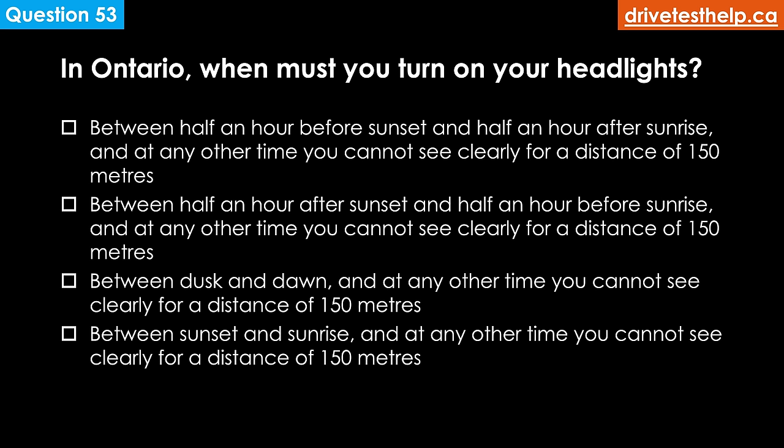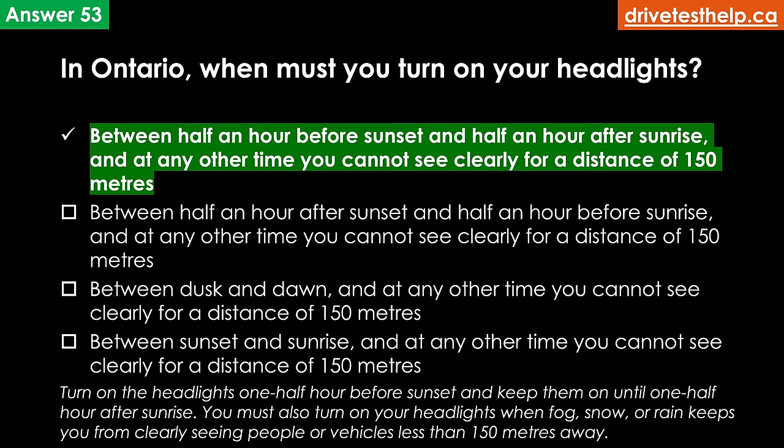In Ontario, when must you turn on your headlights? Options: between half an hour before sunset and half an hour after sunrise, and at any other time you cannot see clearly for 150 meters; between half an hour after sunset and half an hour before sunrise, and at any other time you cannot see clearly for 150 meters; between dusk and dawn, and at any other time you cannot see clearly for 150 meters. The correct answer is between half an hour before sunset and half an hour after sunrise, and at any other time you cannot see clearly for a distance of 150 meters.